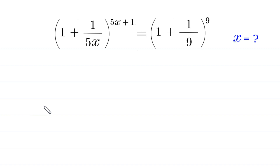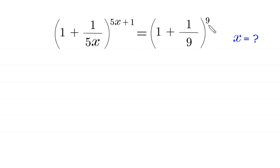Hello everyone, you are welcome to how to solve this very nice exponential equation. The equation is: 1 plus 1 over 5x, whole to the power 5x plus 1, is equal to 1 plus 1 over 9, whole to the power 9. Our job is to find all possible values of x.